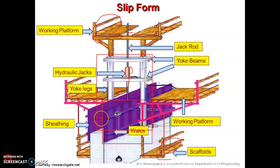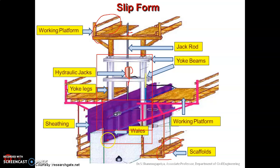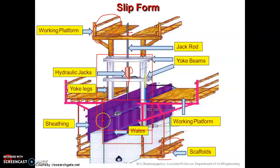Initially, the vertical slip forming method was used only for structures with uniform cross sections. With recent developments, it is now possible to slip form continuous vertical structures with varying cross sections. Projections such as walkways cannot be formed during sliding, so dowel bars are bent to fit within the forms and straightened later. Openings for doors and windows are not attended to during sliding — blockouts, inserts, and pockets for beams are placed inside the form as the slide progresses and completed later.